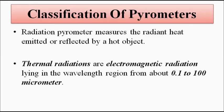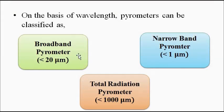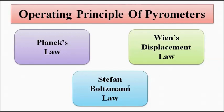There are different ways in which pyrometers can be classified. Since thermal radiations lie in the wavelength region from 0.1 to 100 micrometers, we can convert this wavelength range into different zones according to which pyrometers can be classified. For example, broadband pyrometers are used to measure radiations with wavelength less than 20 micrometers; narrow band pyrometers are used for measurement of radiations less than 1 micrometer; and total radiation pyrometers are used for measurement of thermal radiations less than 1000 micrometers. All measurements are related to the three laws: Planck's law, Wien's displacement law, and Stefan-Boltzmann's law.